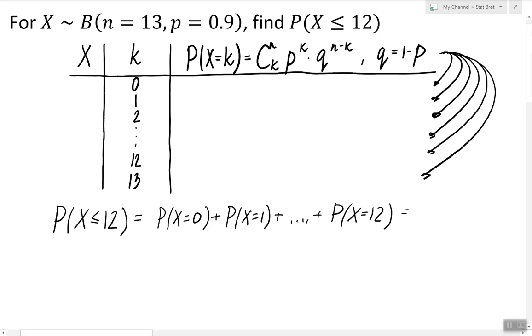However, we can also apply one of the probability rules which says that the probability of an event is equal to 1 minus the probability of its complement. In this case, what's the complement of X being less than or equal to 12?